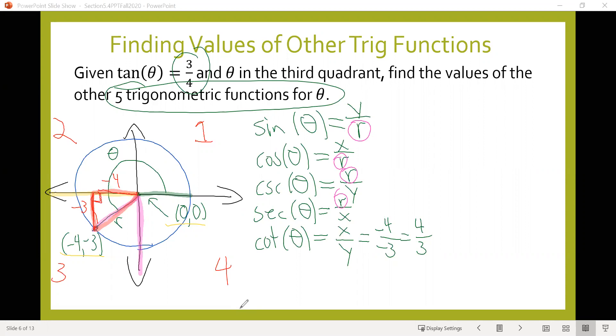If we blow this up, we have a right triangle where the length of this side is negative four, the length of this side is negative three, and we need to find r. We can use the Pythagorean theorem: negative four squared plus negative three squared equals r squared.